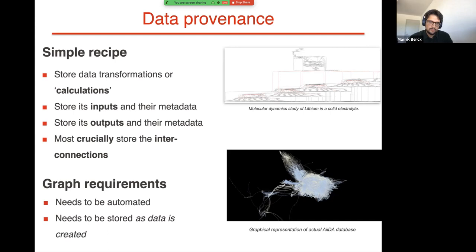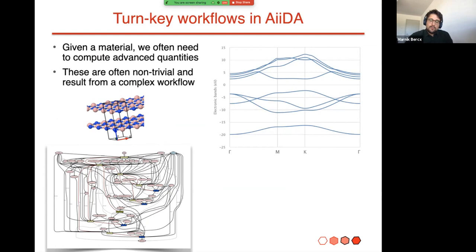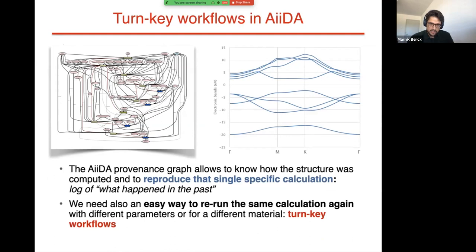AiiDA aims to compute complex properties, and for this we offer tools to build complex workflows requiring several steps to obtain a property such as the band structure. In combination with provenance, we store this entire collection of calculations automatically so you have a proper log of what happened, others can see exactly how your calculations were executed, and also reproduce them. We also want to store and share these workflows with others so they can run them — providing what we call turnkey workflows that are easy to use: you just plug in some basic inputs and get started.